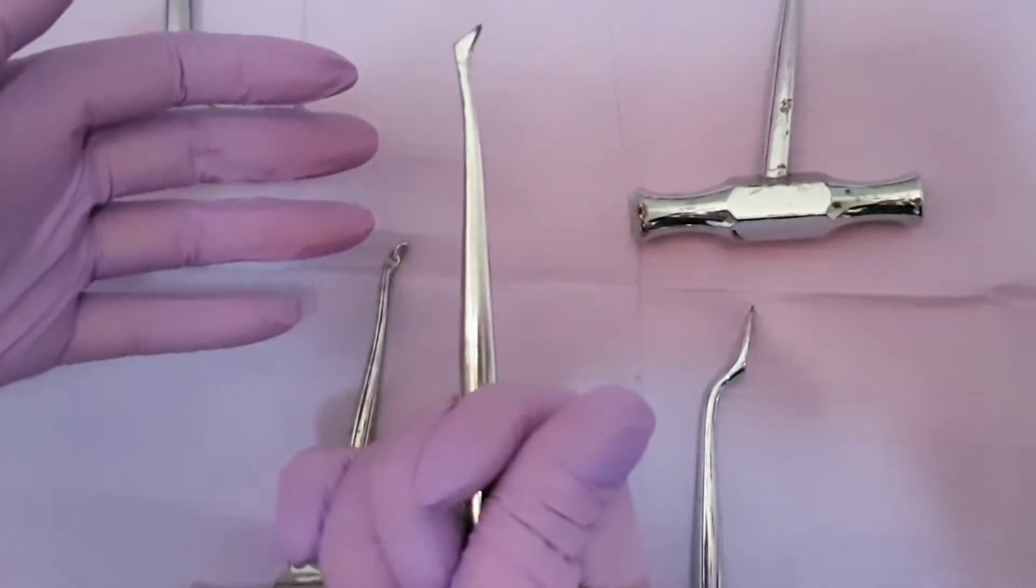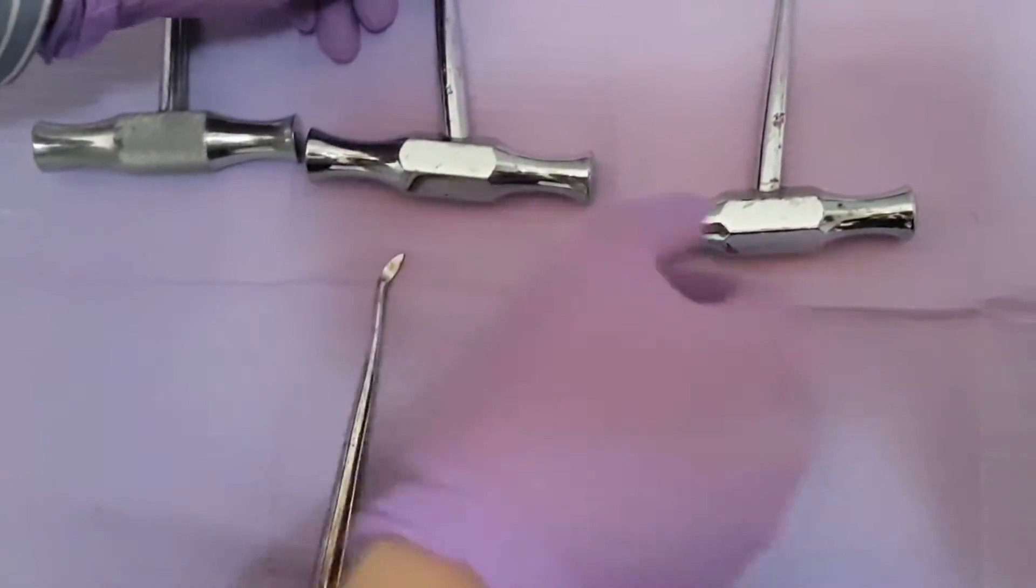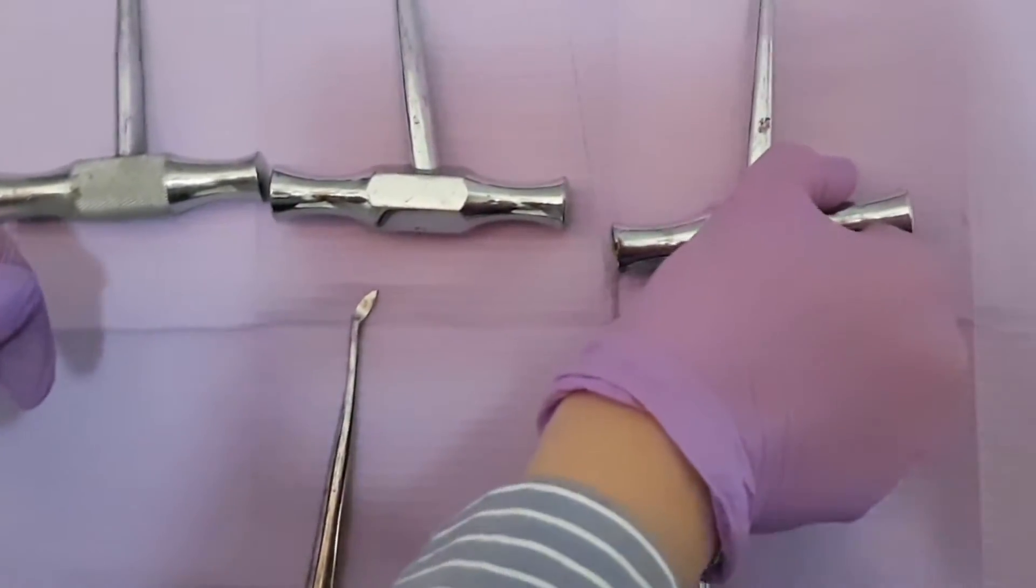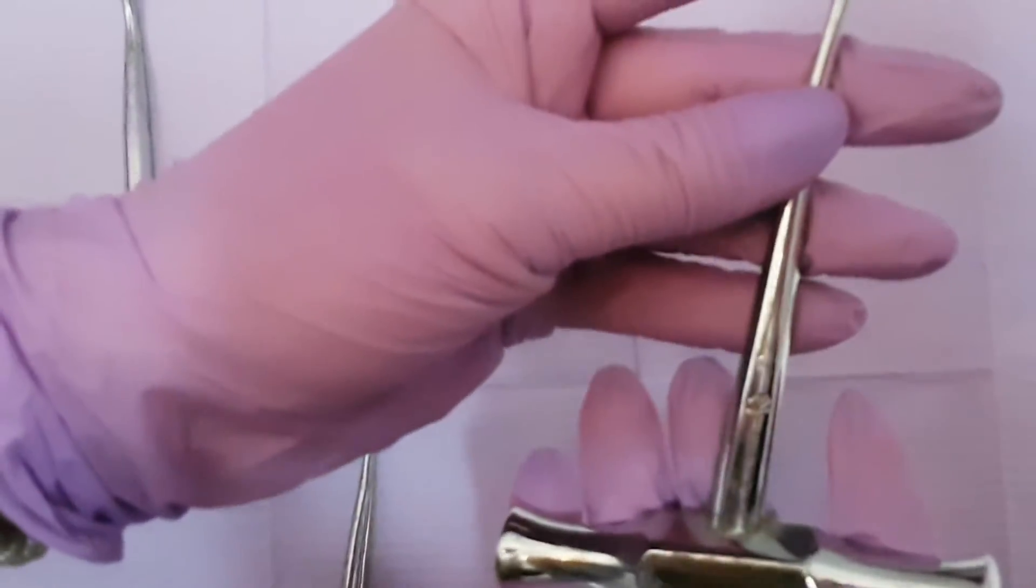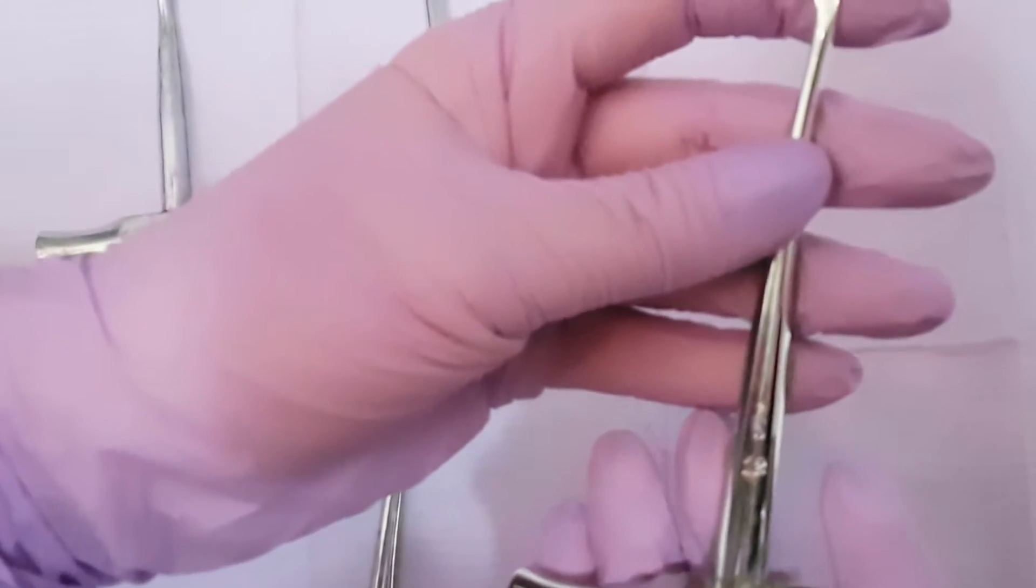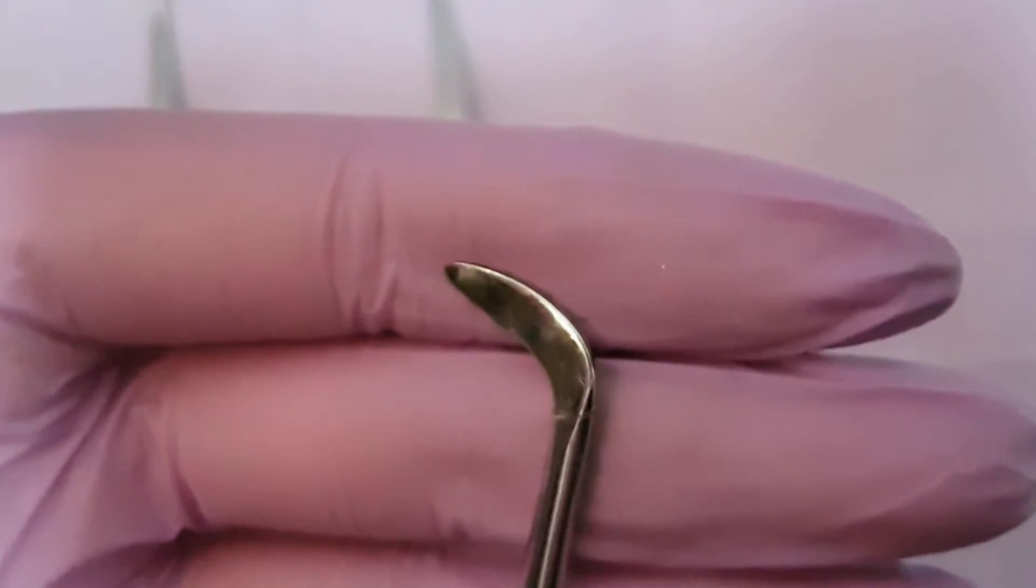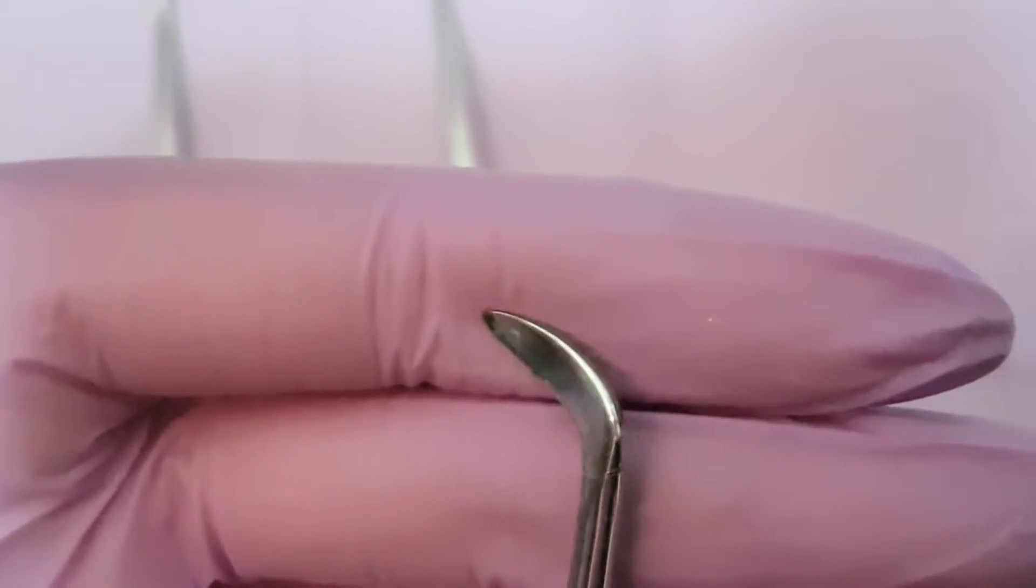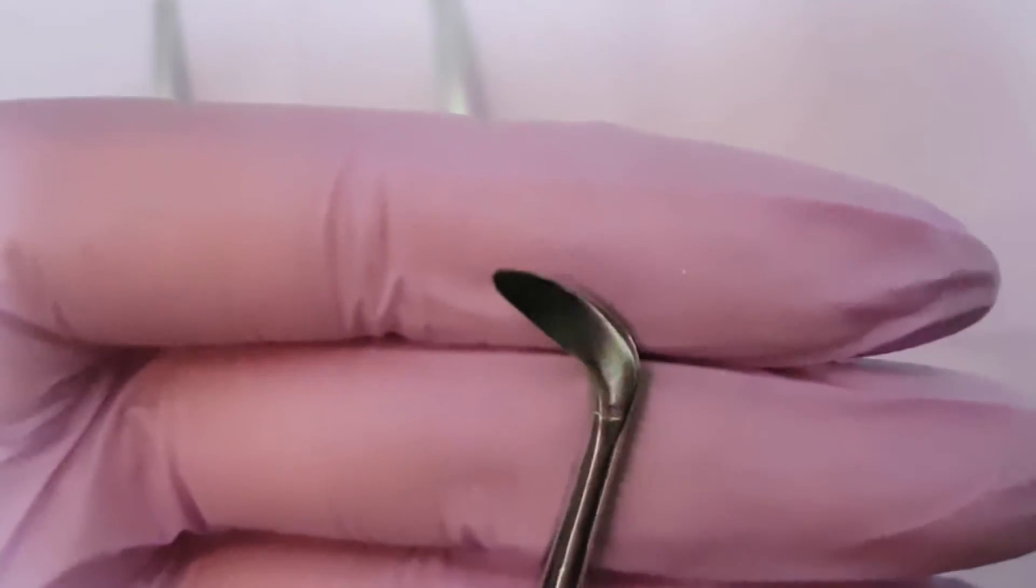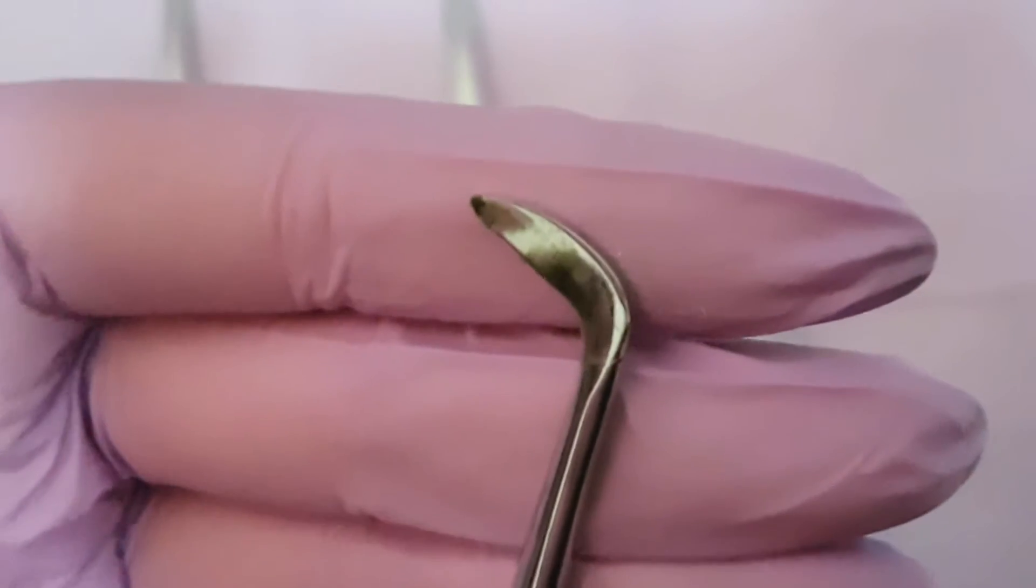Next, we will talk about the elevator that is called a winter dental elevator. We can see that the blade is positioned at 120 degrees, and like all the others, it is used during extraction of teeth in the lower jaw.